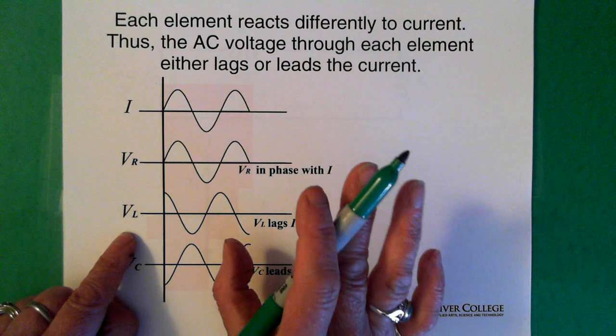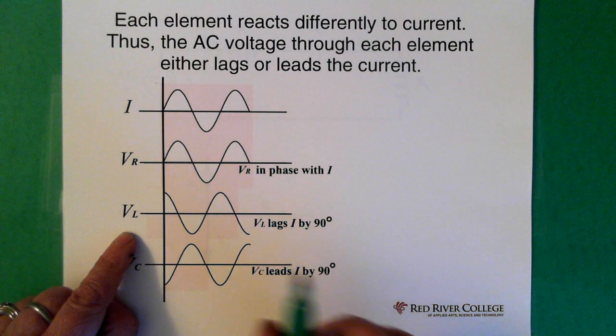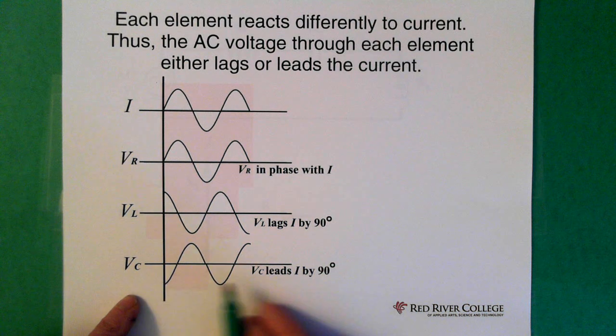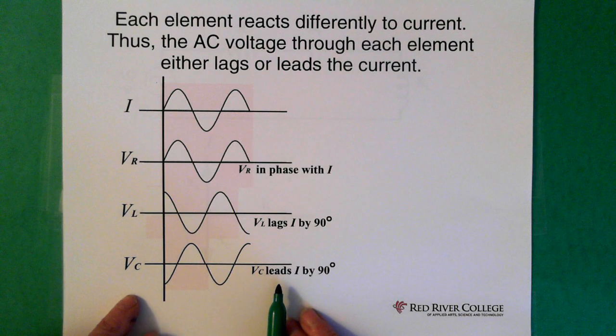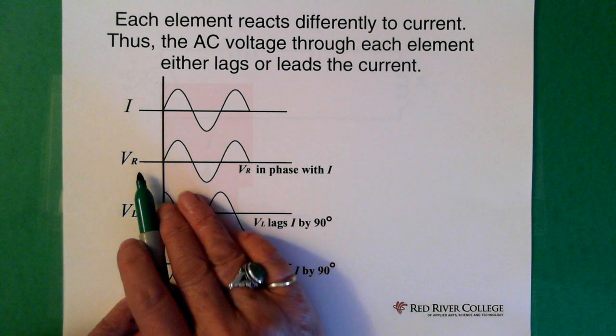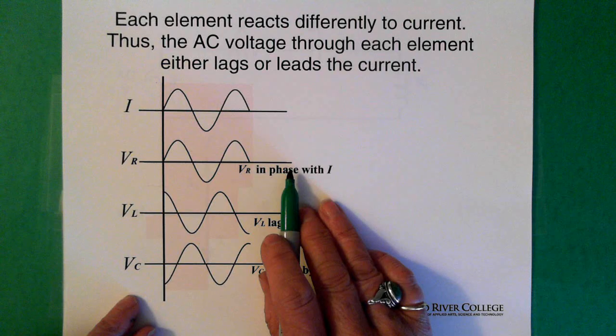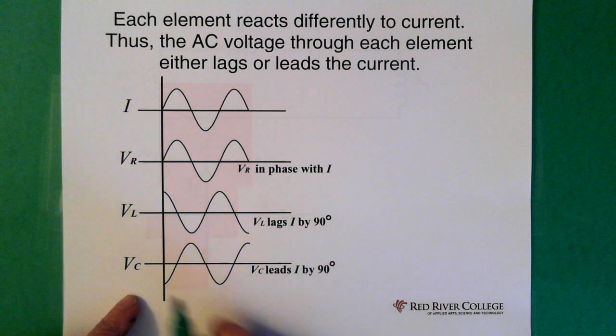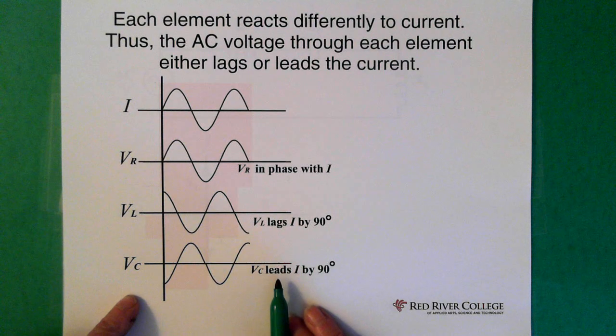Most of this really is just in that information. You don't have to worry about it too much. And the voltage across the capacitor leads by 90 degrees. So voltage across the resistor is in phase, voltage across the inductor lags by 90 degrees, voltage across the capacitor leads by 90 degrees.